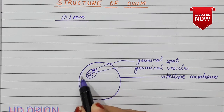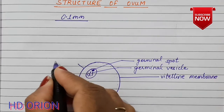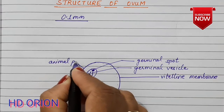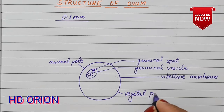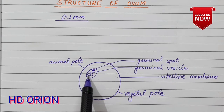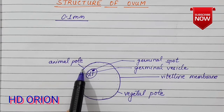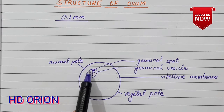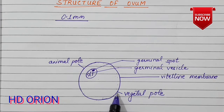The position of the nucleus divides the cell into two poles. The pole where the nucleus is located is called the animal pole, and the opposite pole is called the vegetal pole. Fertilization takes place between the nucleus of the ovum and the sperm, and it is from the animal pole that the sperm gains entry, as it is convenient for the sperm to reach the nucleus from there.